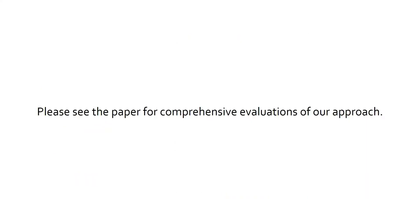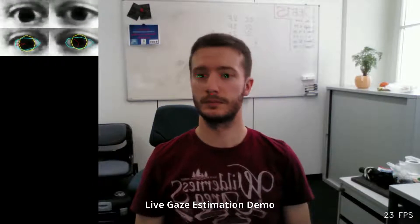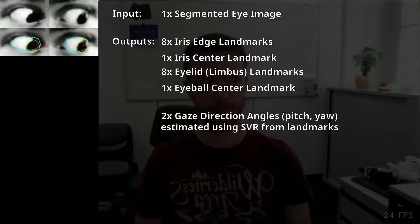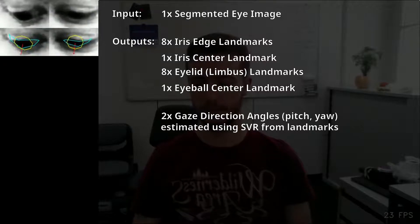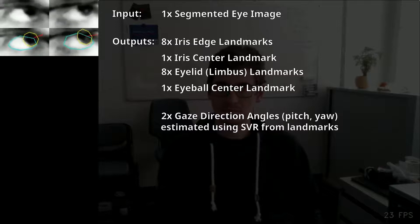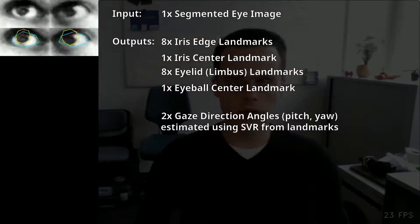Please see the paper for comprehensive evaluations of our approach. We now show live demos of our landmarks-based SVR method on unseen people. In these sequences, you can see the input to our method on the top left. The segmented eye images are processed by our neural network to find eye region landmarks. We then pass the landmarks to a support vector regressor trained on MPI eye gaze and UT multi-view datasets.